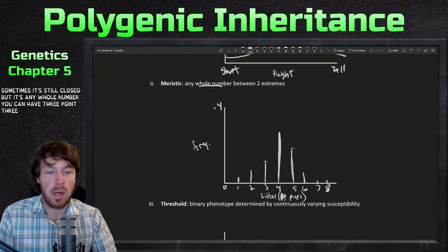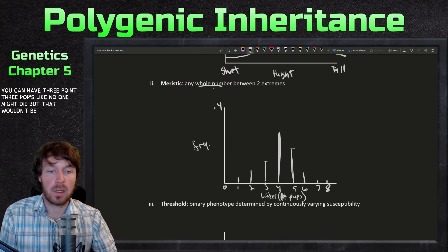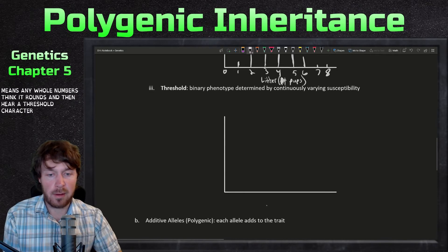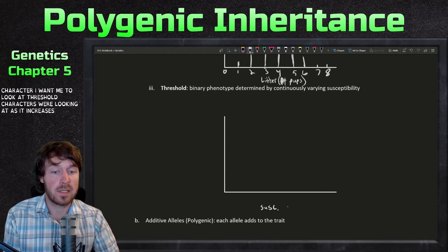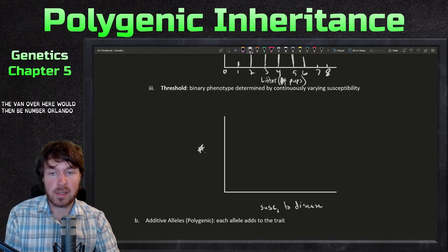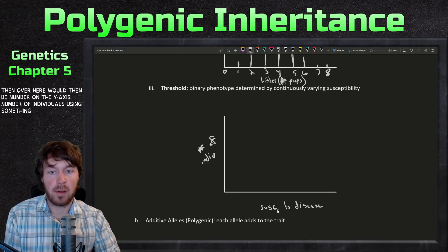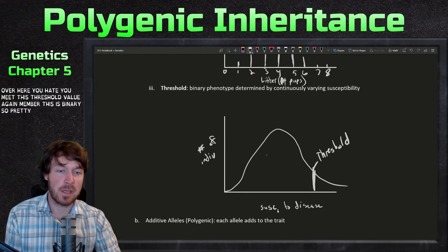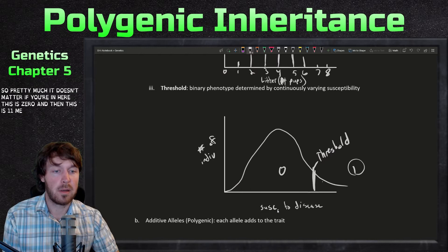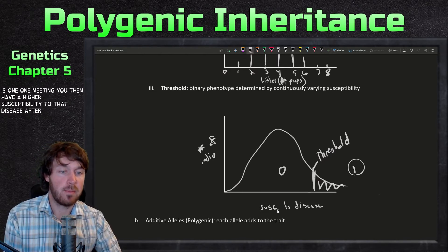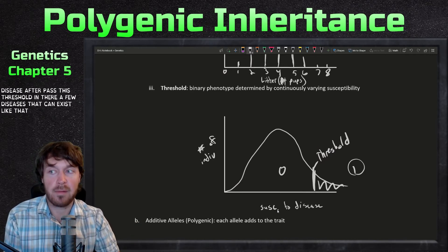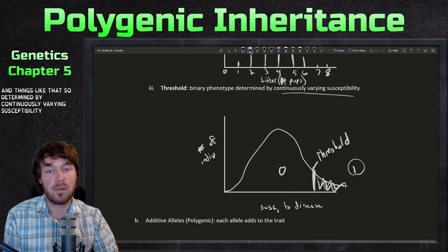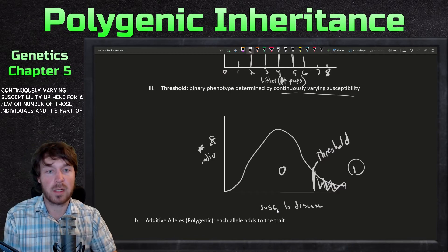You can't have 3.3 pups — that's just what meristic means, any whole number. And then a threshold character: as the value increases, it increases susceptibility to disease. It looks like a bell curve, but then you meet this threshold value. Remember, this is binary — it's either zero or one, meaning you then have a higher susceptibility to that disease past this threshold. A few diseases exist like that — some cancers, autism, and things like that — determined by continuously varying susceptibility. These are all part of quantitative characters.